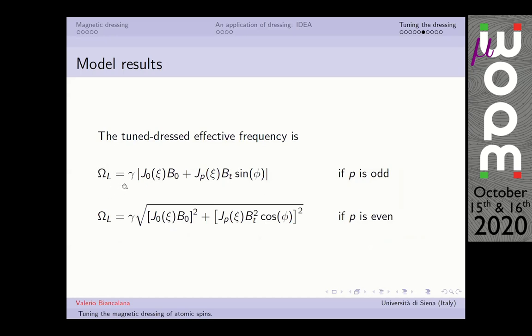More particularly, this is the result of the model. The effective Larmor frequency is given by this frequency plus this quantity. In case the tuning field is harmonic with an odd multiple, there's a sine in the quadrature. In case p is even, we have cosine. We have a dependence on both the amplitude of BT and on the relative phase between the tuning field and the dressing field. We have two handles to adjust the effect of the tuning field, and this term can be as large as this or even larger. This is a very good handle to control the precession.